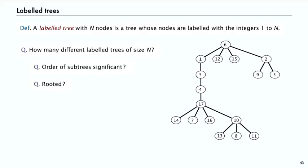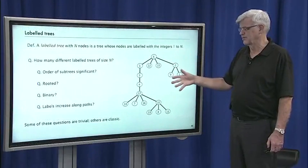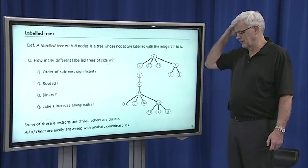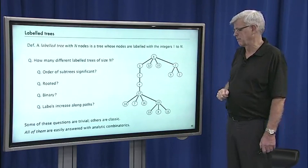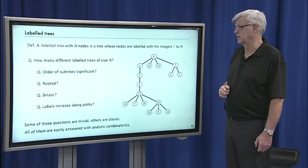Is the order of a subtree significant? Is there a root? Is there a restriction on the degree of each node? And there's an application called increasing trees where we want the labels to increase along paths in the tree. Some of these questions are very easy to answer; others are classic problems in combinatorics. But our point for this section is that all of them are easily answered in a uniform manner with analytic combinatorics.